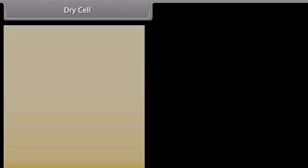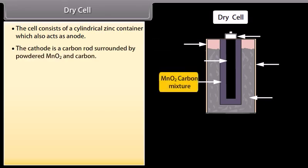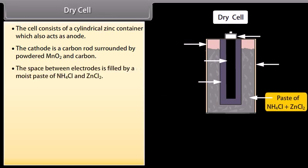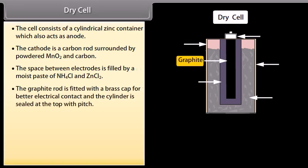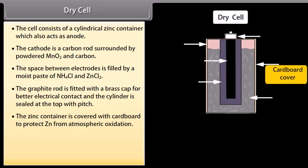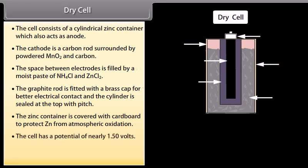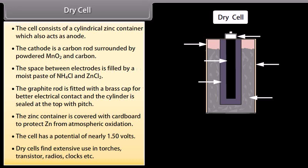Dry cell. The cell consists of a cylindrical zinc container which also acts as anode. The cathode is a carbon rod surrounded by powdered MnO₂ and carbon. The space between electrodes is filled by a moist paste of NH₄Cl and ZnCl₂. The graphite rod is fitted with a brass cap for better electrical contact, and the cylinder is sealed at the top with pitch. The zinc container is covered with cardboard to protect Zn from atmospheric oxidation. The cell has a potential of nearly 1.50 volts. Dry cells find extensive use in torches, transistors, radios, clocks, etc.